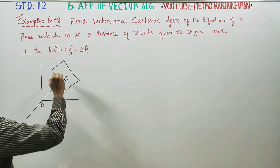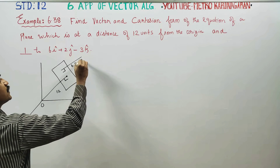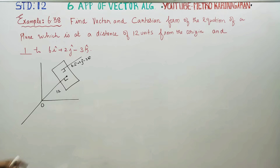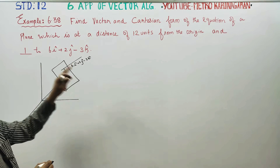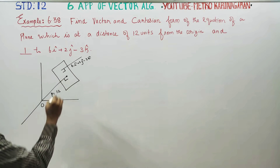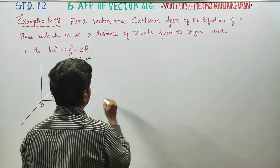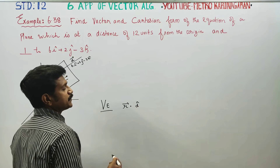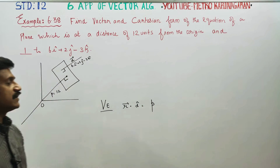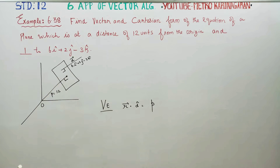One vector is perpendicular to the plane. The perpendicular vector is 6i + 2j - 3k. The vector equation formula is: r-vector dot unit vector of the perpendicular equals p. This is the vector equation of the plane at a distance of p units from the origin, perpendicular to a given vector.